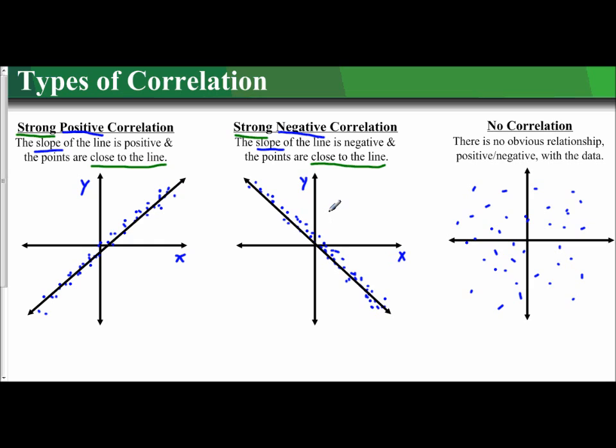So those are the three types of correlations that we will be examining in this lesson on scatter plots and linear regressions.